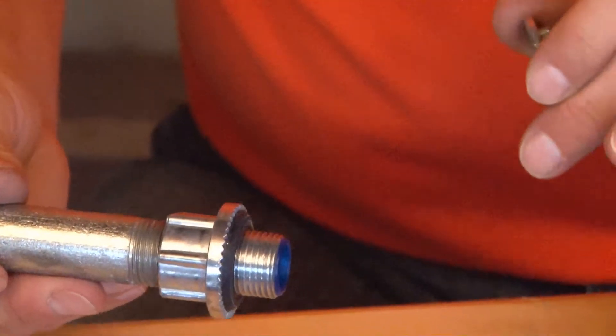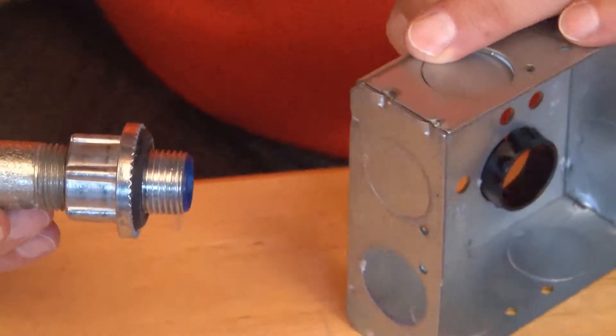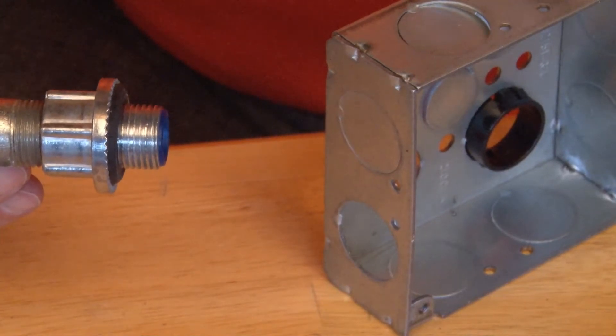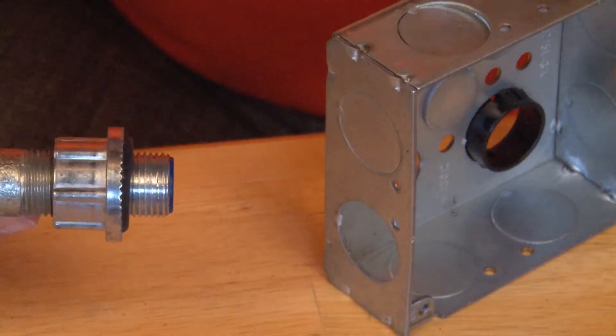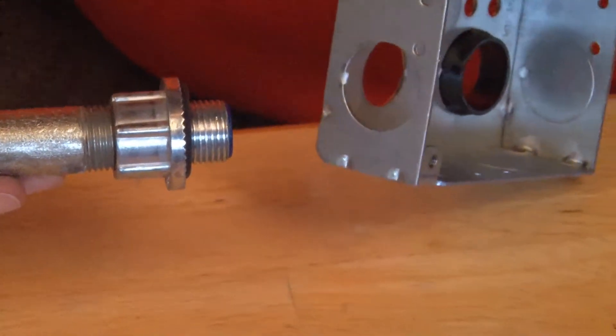At this point, regardless of size, whether it's half inch, three quarter, one inch, one and a quarter, two, two and a half, three, three and a half, or four, you take your pipe and your fitting combo and align it with the hole.